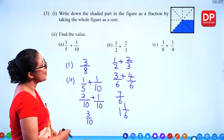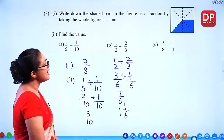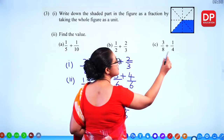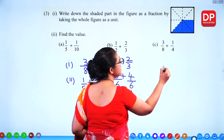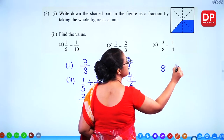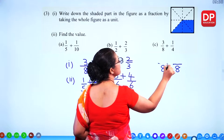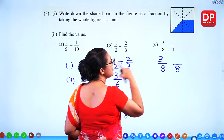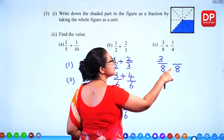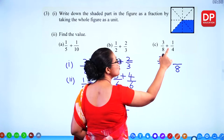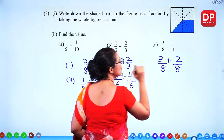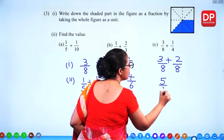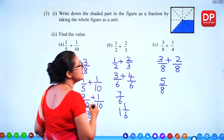For the next addition with denominators 8 and 4, we convert to the same denominator of 8. Multiply 4 by 2 to get 8, and multiply the numerator by 2: 2 times 1 = 2. Then add numerators: 3 plus 2 = 5. The answer is 5/8.